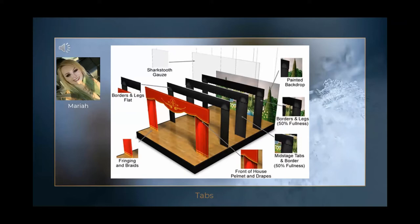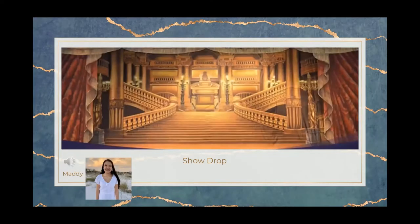Tabs are drapes that are hung perpendicular to the proscenium and at the sides. They're used to completely mask the wings and they run upstage to downstage. Next we have the show drop. This is a large unframed material suspended from a batten, usually weighted by a chain at the bottom, painted or plain. Here is an example of a show drop — the curtain on the sides, and the show drop is the background of the golden staircase and all the other features.